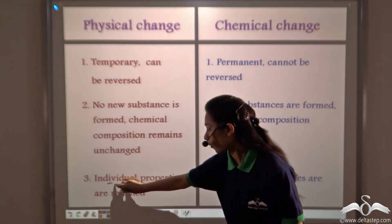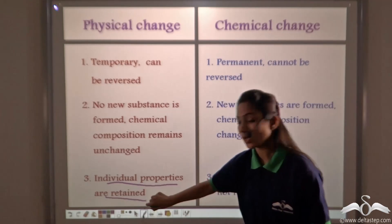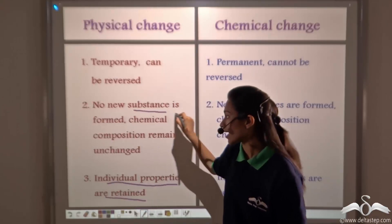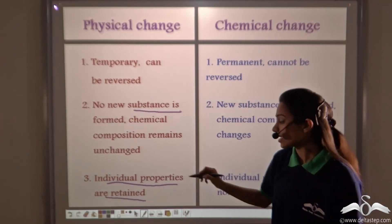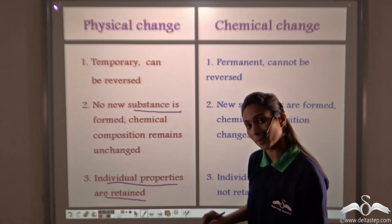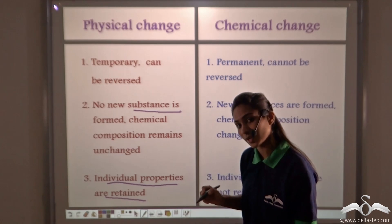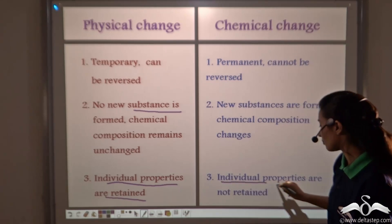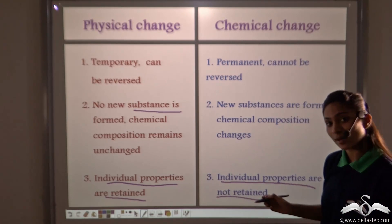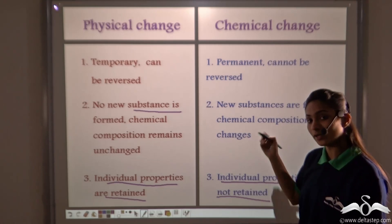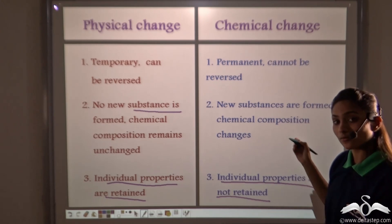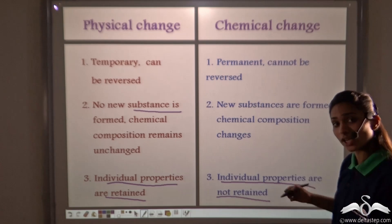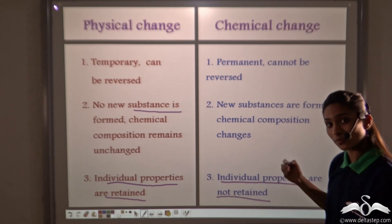Now, individual properties are retained when a matter undergoes physical change, as no new substance is formed. So the original substance retains its individual properties — it remains the same ice cream. Whereas when matter undergoes chemical change, individual properties are not retained. For example, when we burnt the wood, the wood does not retain its individual properties. It changed into ashes when it was burnt.